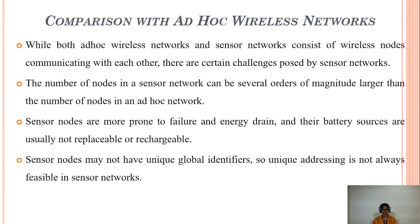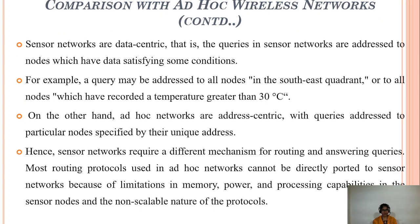Next we will discuss the differences between ad hoc networks and sensor networks. Both ad hoc and sensor networks consist of wireless nodes which communicate with each other. The number of nodes in a sensor network can be more when compared to ad hoc networks. Sensor nodes are prone to failure and energy drain; the battery resources are not replaceable and rechargeable. Sensor nodes do not have unique global identifiers, and unique addressing is not always feasible. Whereas sensor networks are data centric, ad hoc networks are address centric.